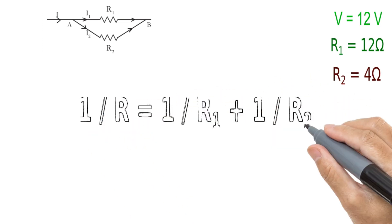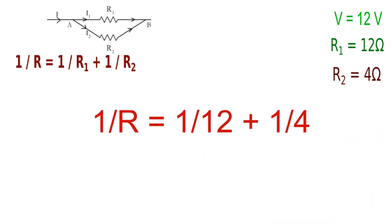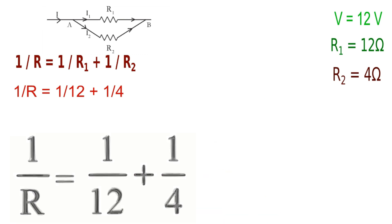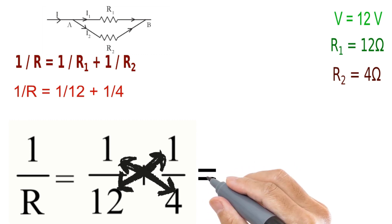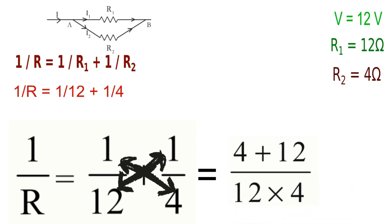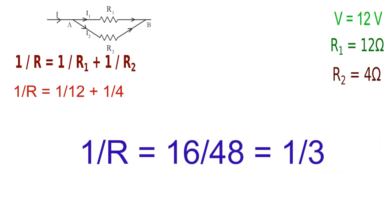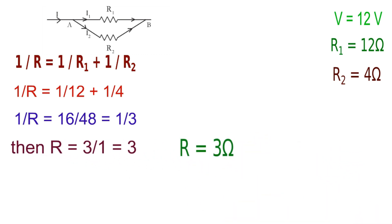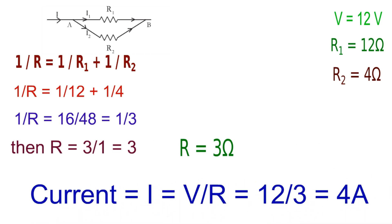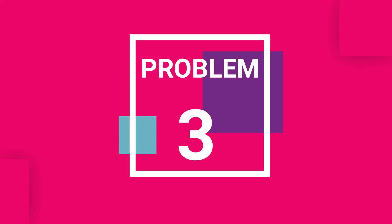Effective resistance: 1 by R = 1 by R1 plus 1 by R2, that is 1 by 12 plus 1 by 4. Cross multiplying and adding: 1 by R = 1 by 3, so R = 3 ohm. Current I = V by R = 12 divided by 3 = 4 Ampere.